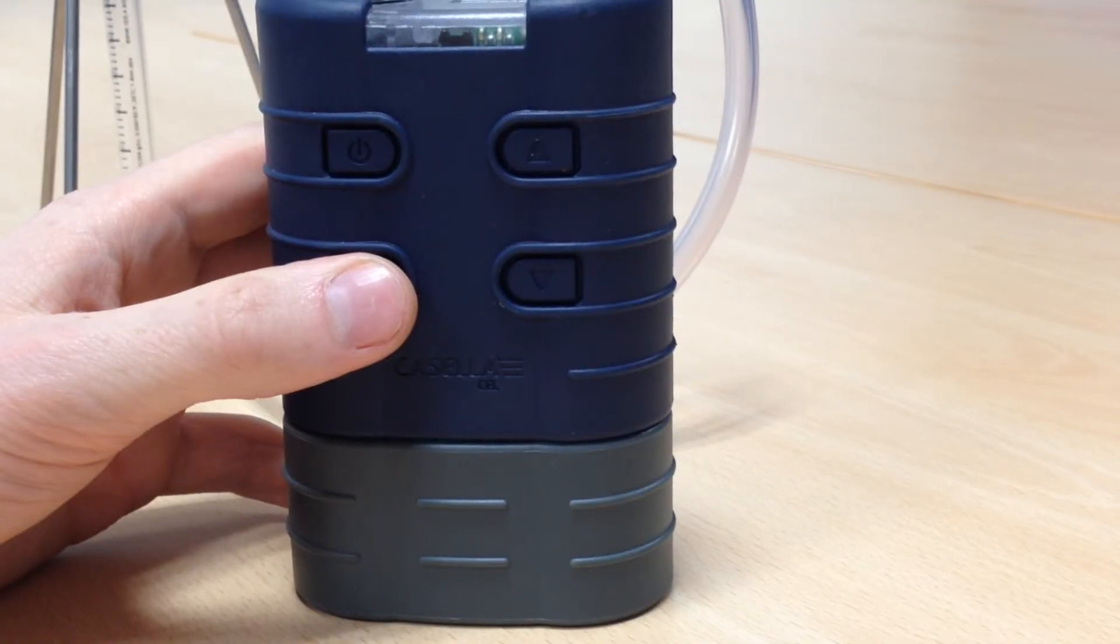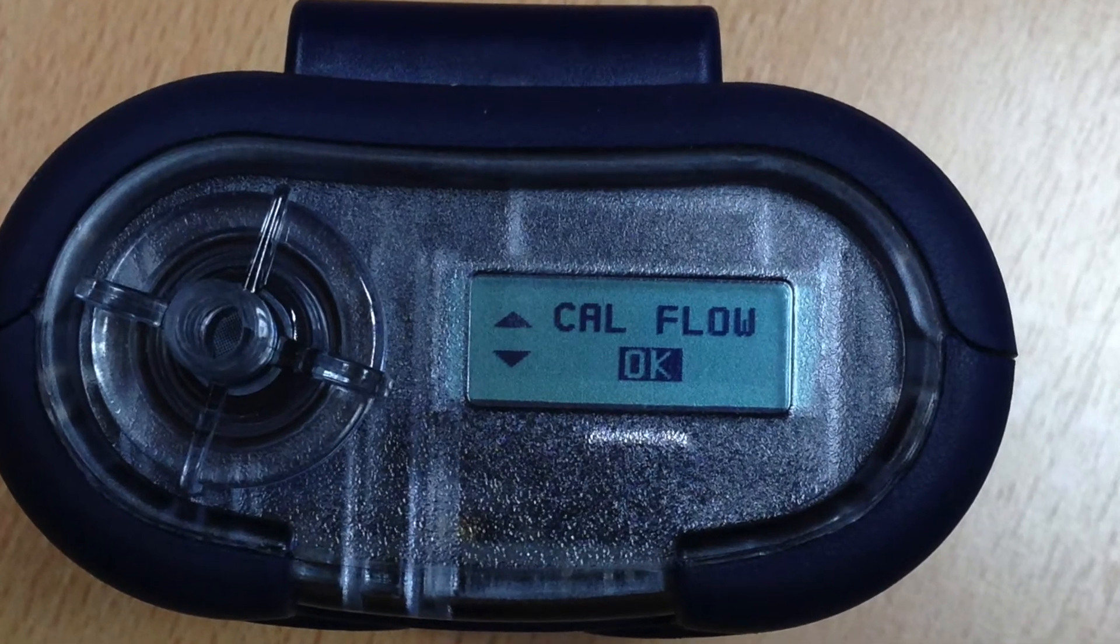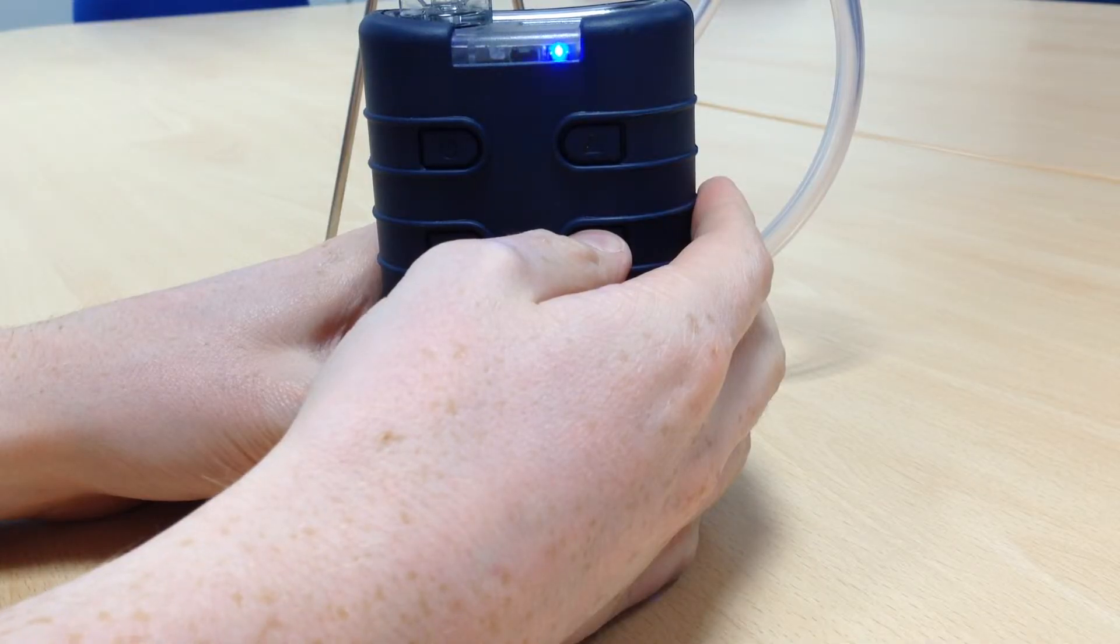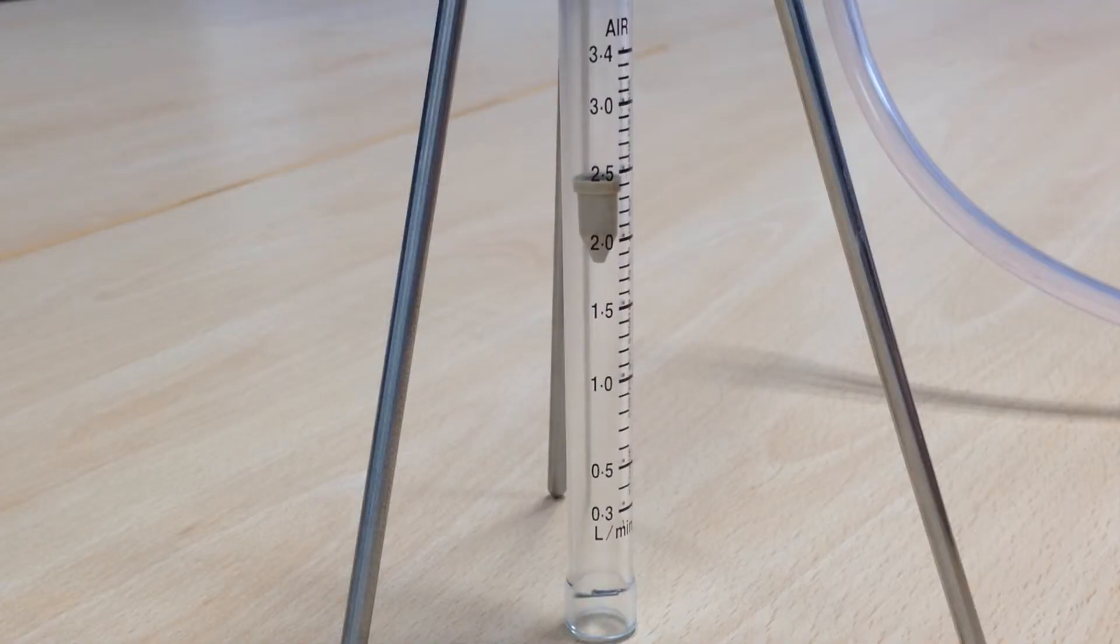Press the Enter key and the menu will change to Cal Flow. Press Enter again and the pump will start. Hold the up or down arrow key until the top of the float in the rotameter is in line with the set point chosen.